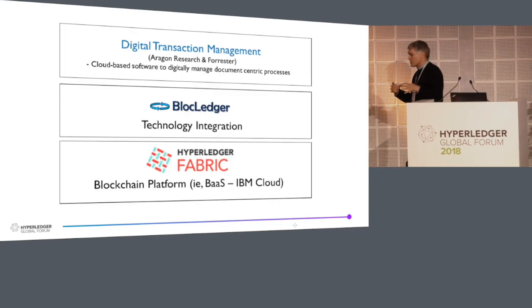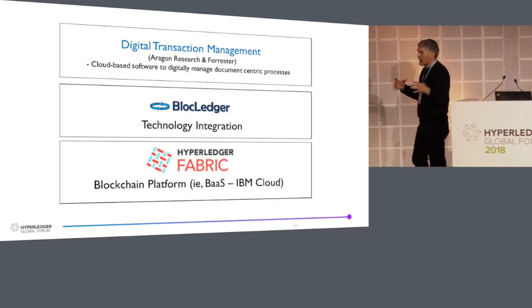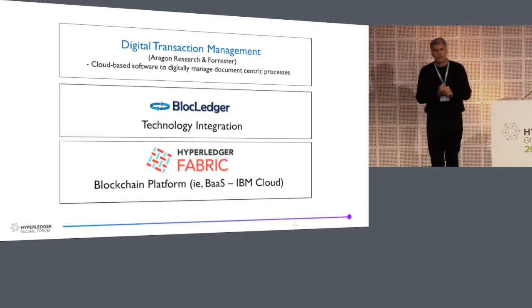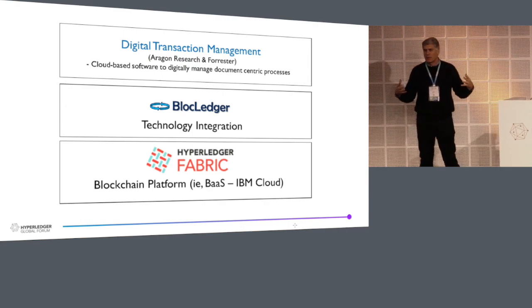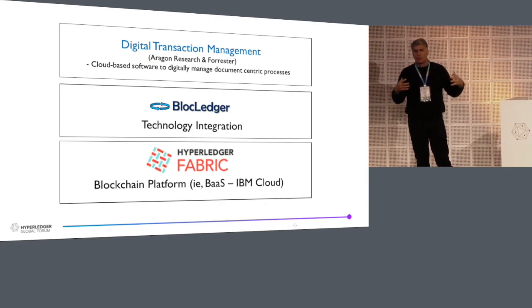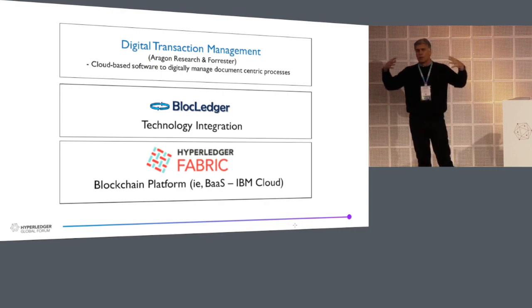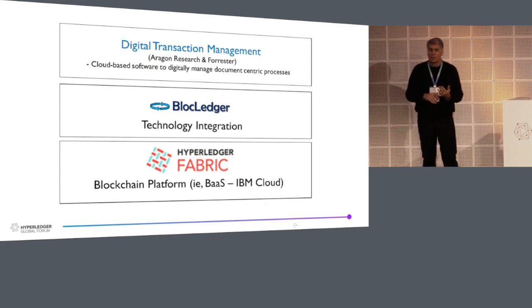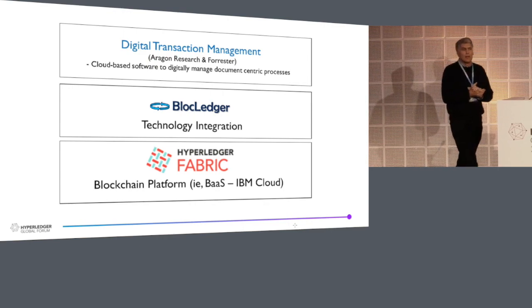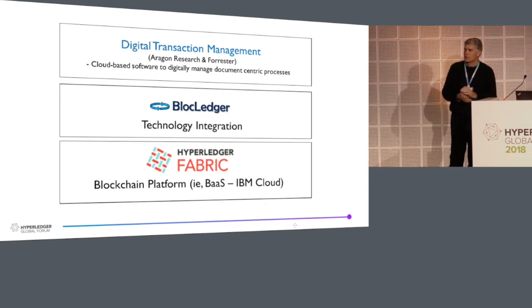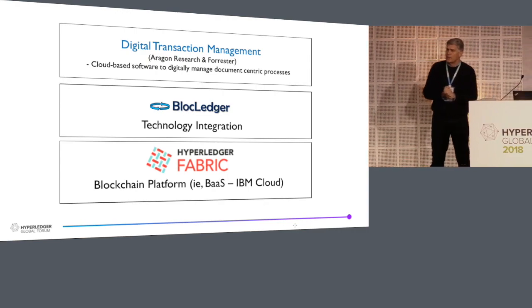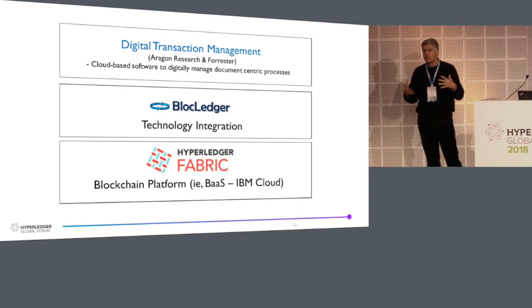We sit as an infrastructure technology play. We sit on top of Fabric — everything we do relates and leverages Fabric as the underlying blockchain. Then you have applications that sit on top of us, such as a lending platform. That market is called digital transaction management, which is really just the digitization of document-centric processes.